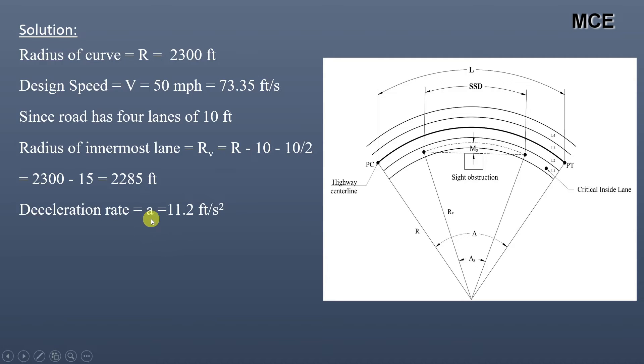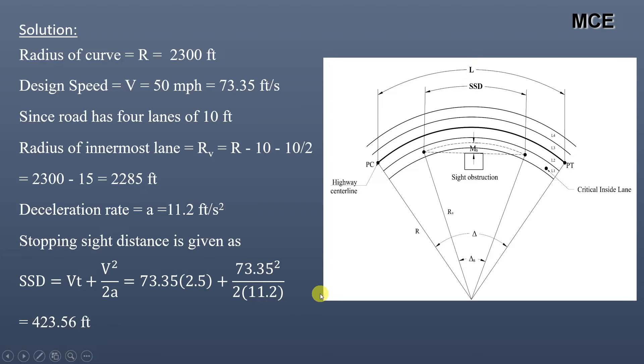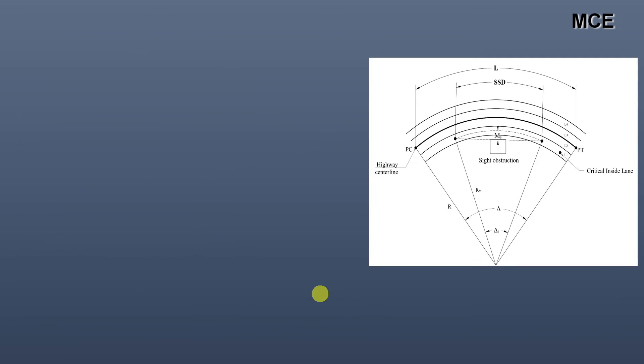Deceleration rate of the vehicle is 11.2 feet per second squared. Stopping sight distance of the vehicle is given as SSD = Vt + V²/2a. Putting values, we get 73.35 × 2.5 + 73.35² / (2 × 11.2), which equals 423.56 feet.